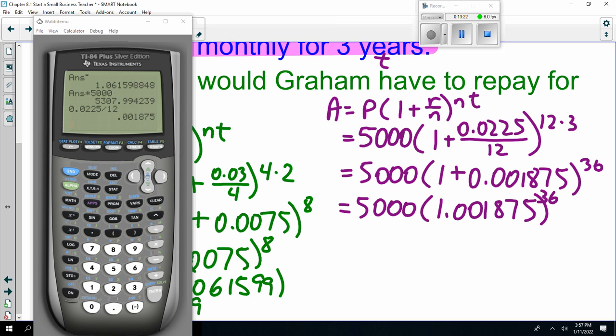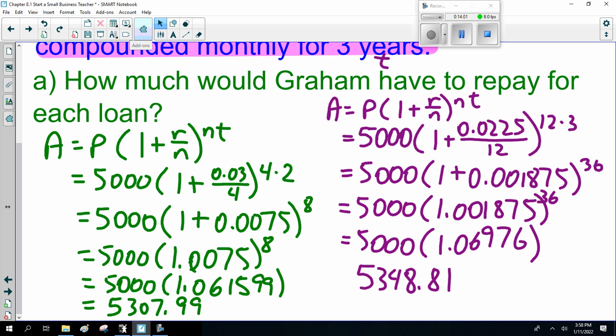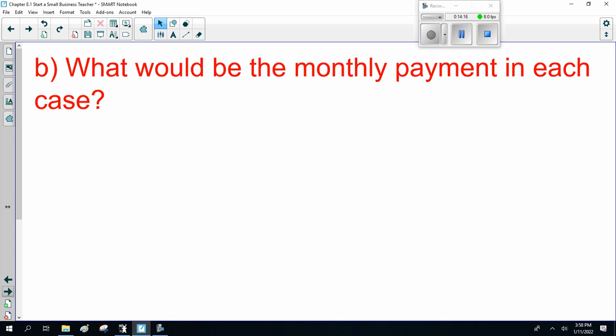So this is 0.001875. Do not round off, because the banks won't. Add one to that: 1.001875 to the power of 36. That's $5,000 times 1.06976, which equals $5,348.81. So how much is he going to have to pay for each loan? First loan: $5,307. The second loan is $5,348.81.